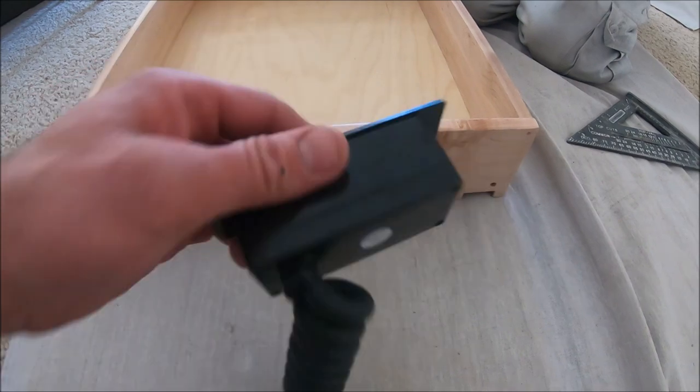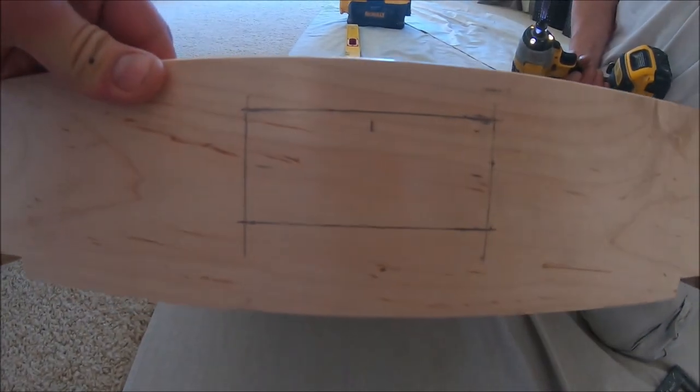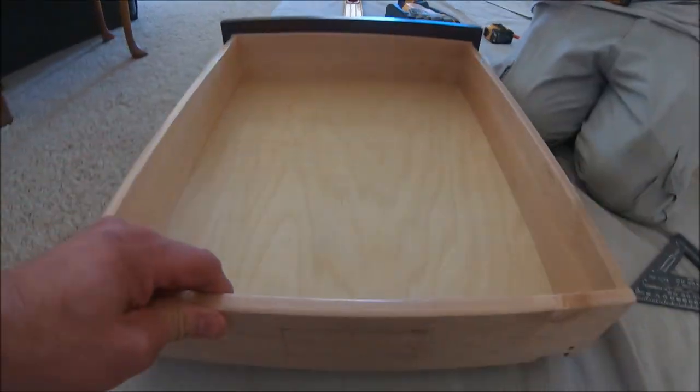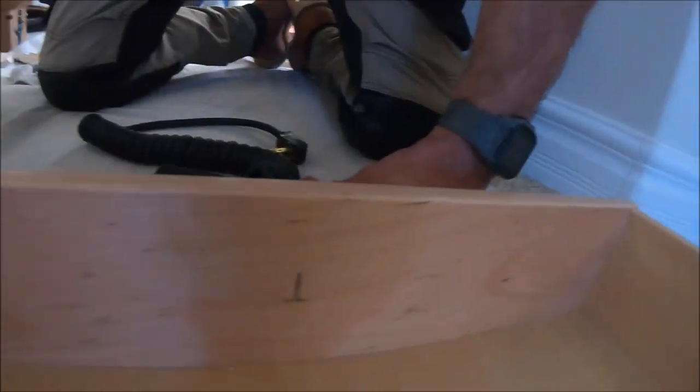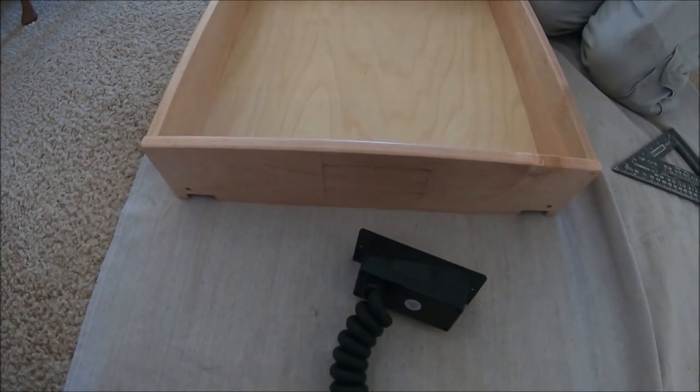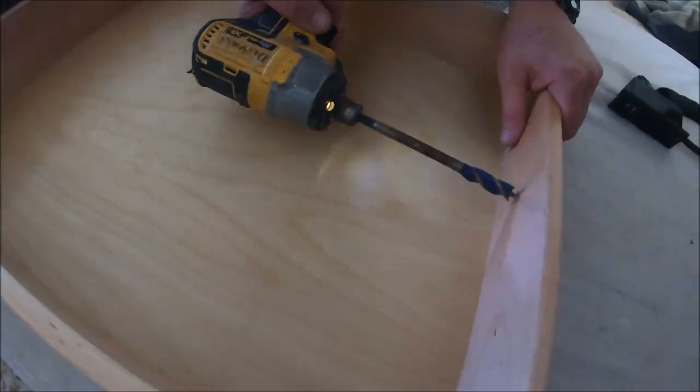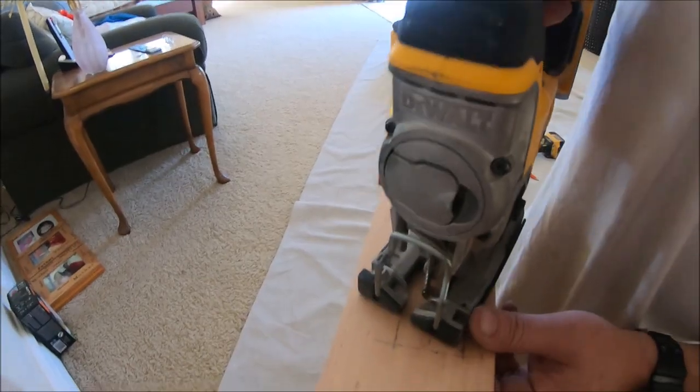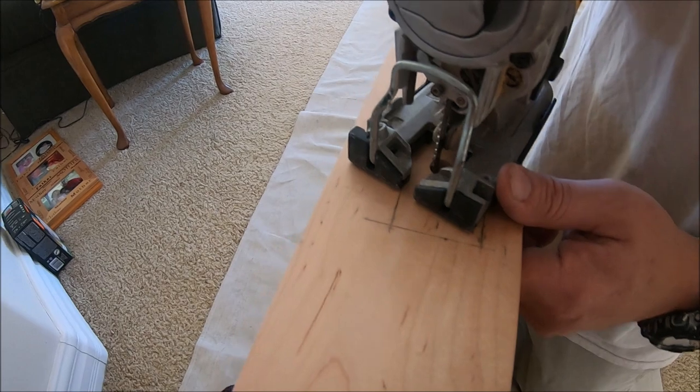Measure the back of the housing here. Center it. Trace it onto your drawer. Drill from the inside so it doesn't blow out. Here we go. Use a jig and cut out the remaining hole. Just like that.